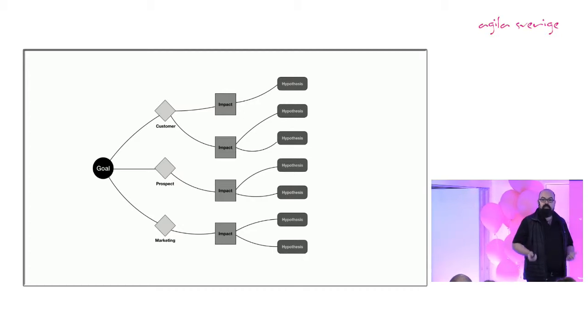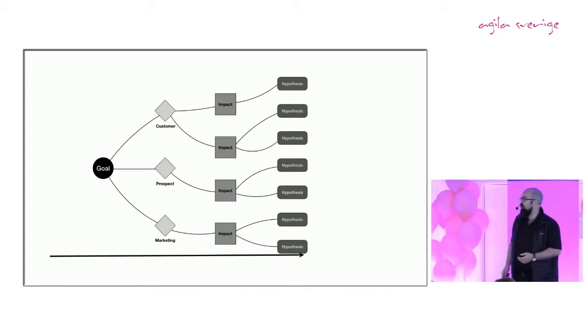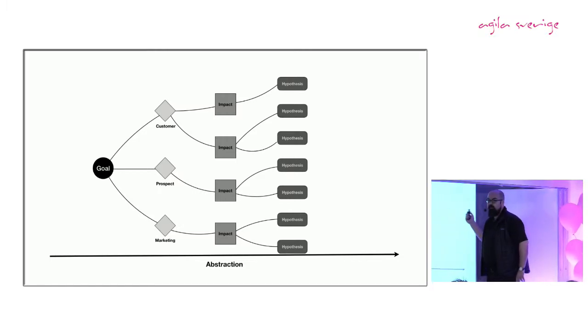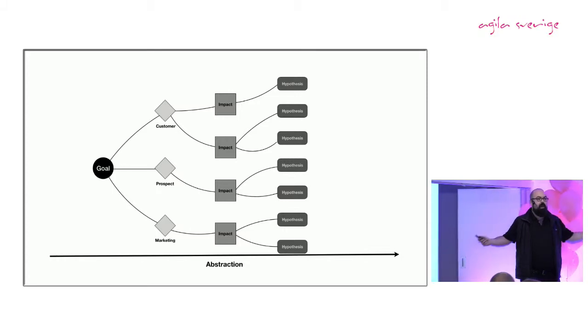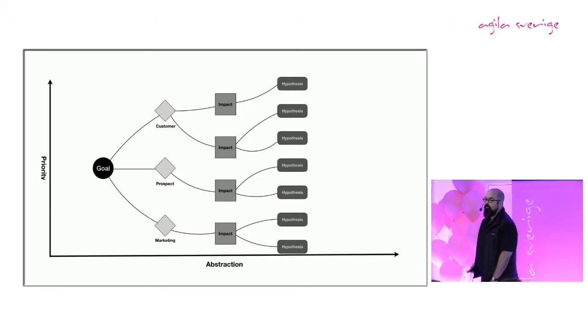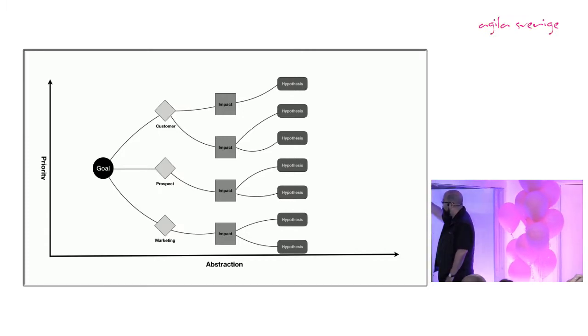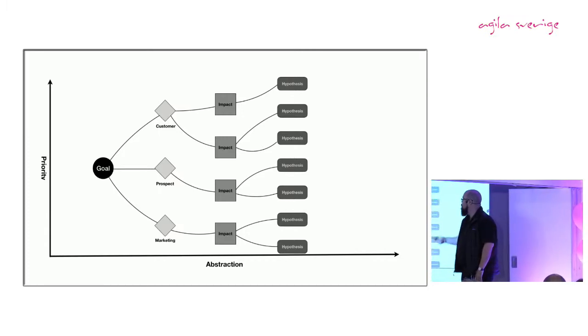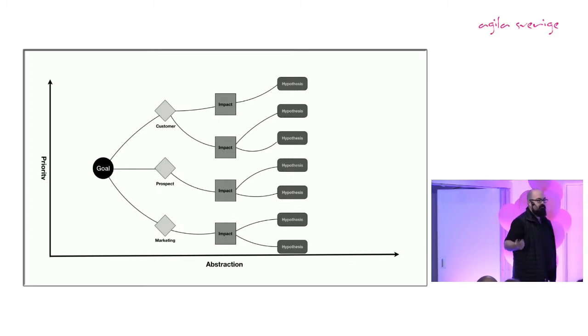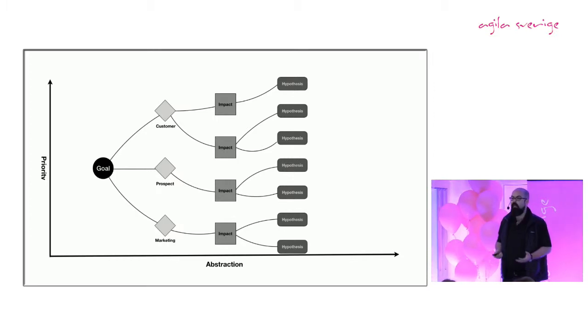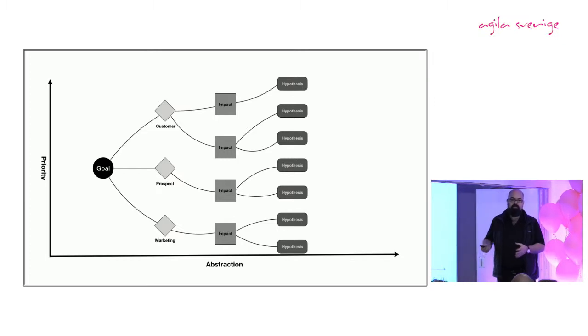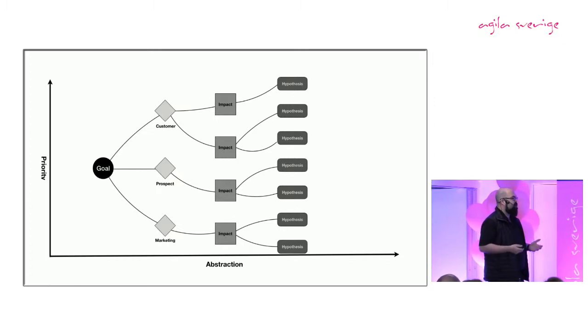But we can change that. We can add in an abstraction axis at the bottom and we can say going from the left to the right takes us further and further away from our goal. Things become more abstracted and we need to understand how we get back to that goal. And then we can set a priority axis going up, so the things at the top are the things we think are the most important. And that covers your deliverables and hypothesis, it covers your impacts, your customers, your goal. What is your most important actor? In this case it's the customer. What is your most important impact? What is your most important hypothesis or deliverable? And by having that in place you can sit there and have conversations with your stakeholders around the priorities of things they're doing.